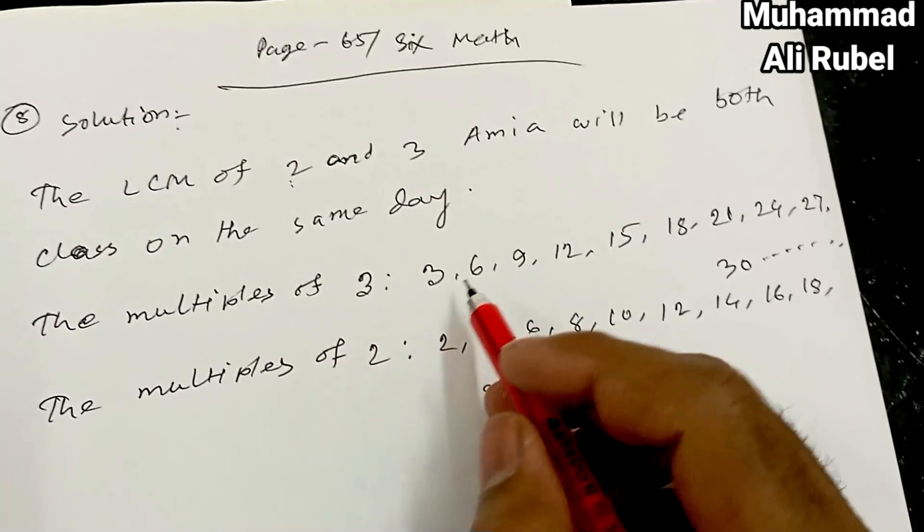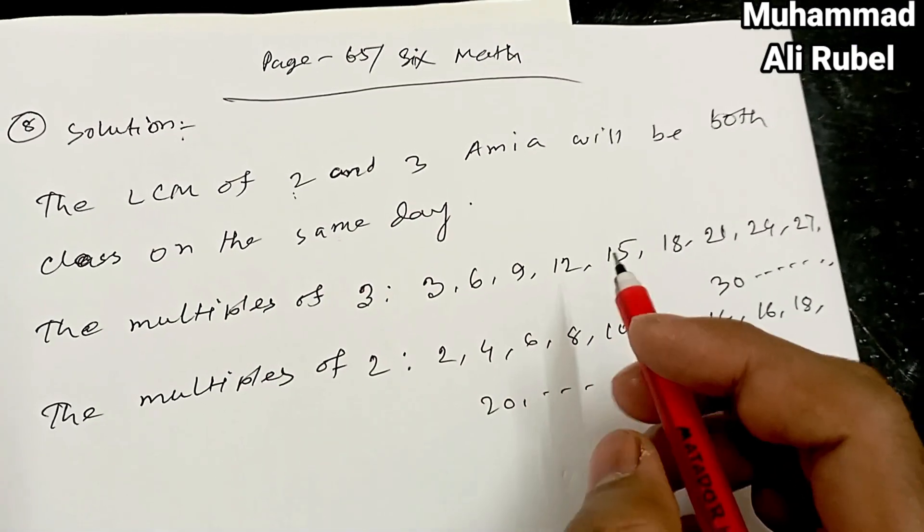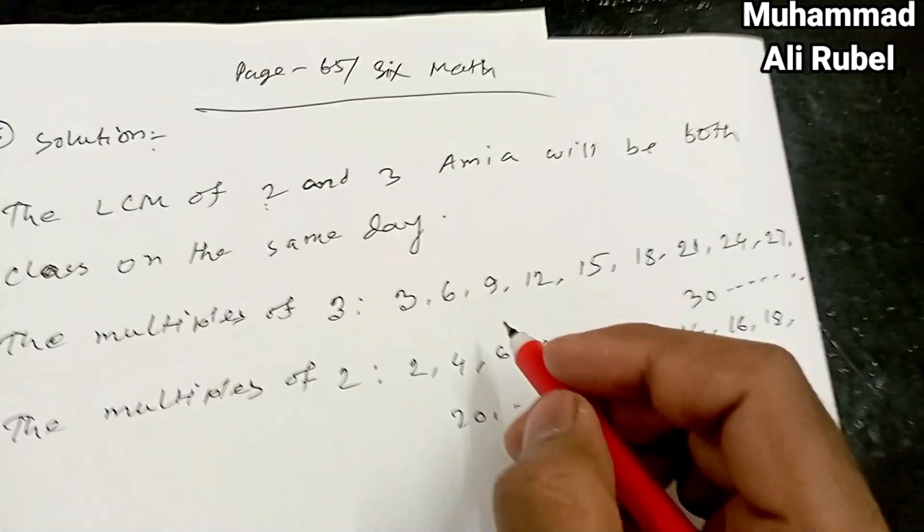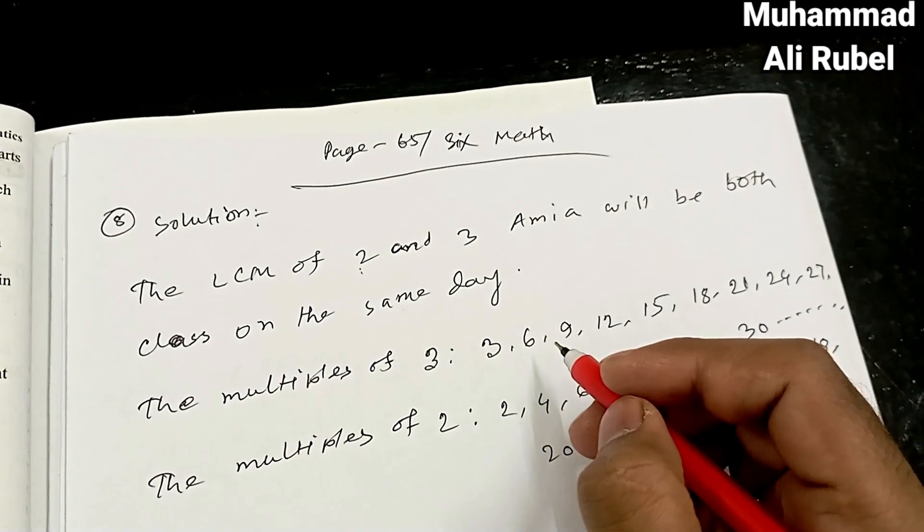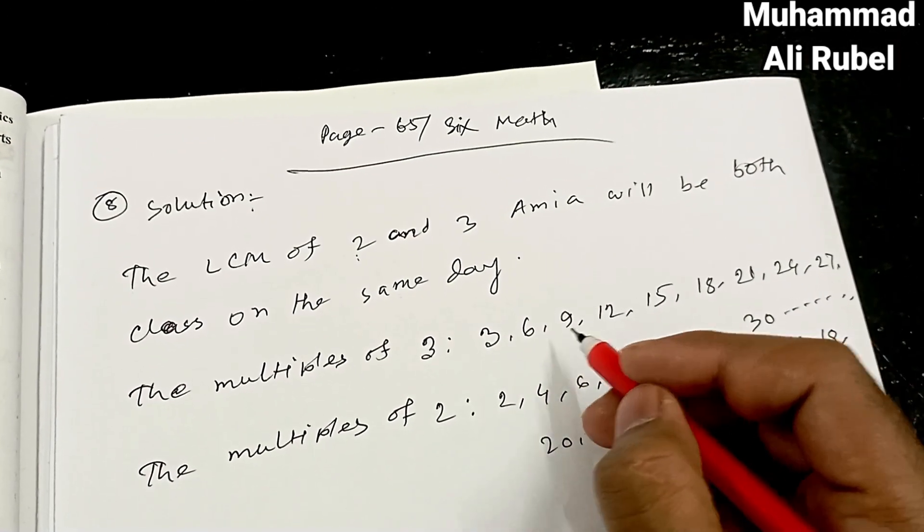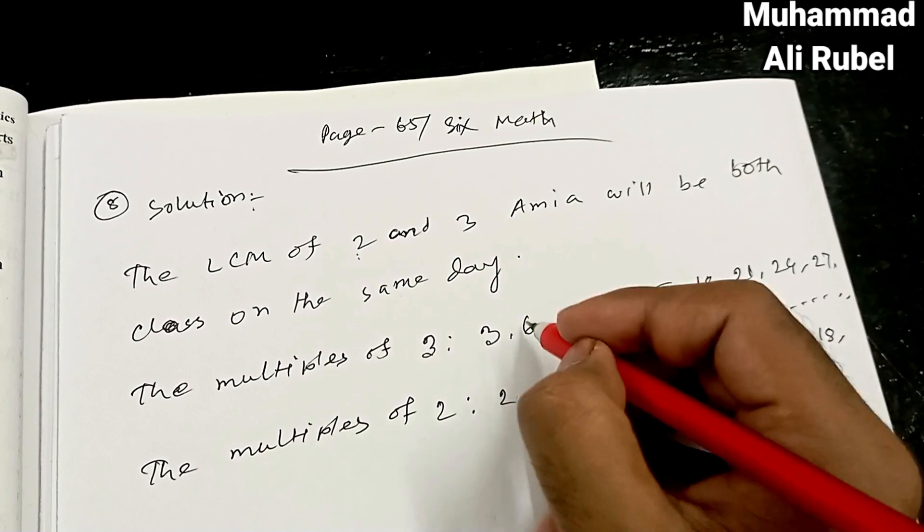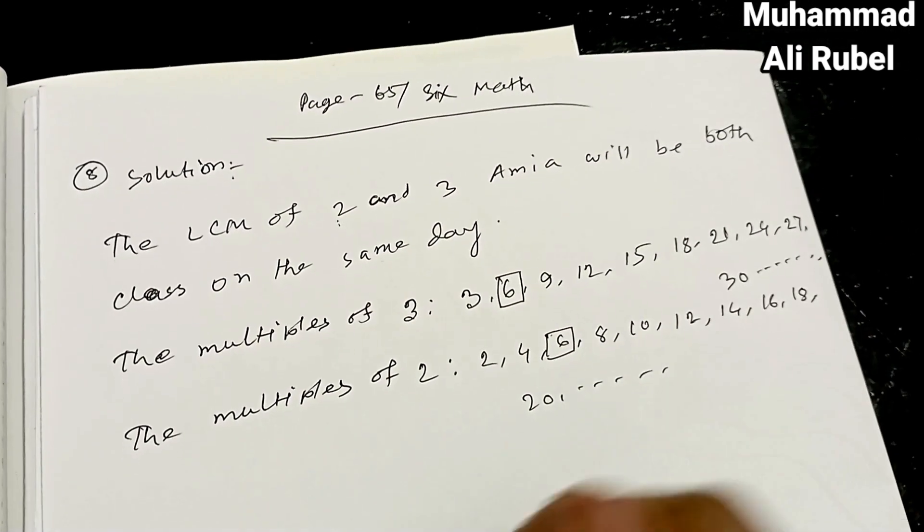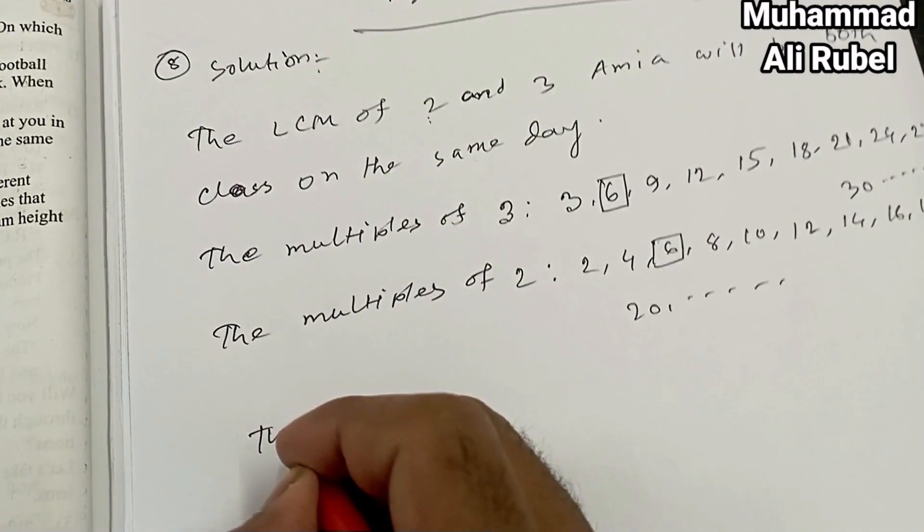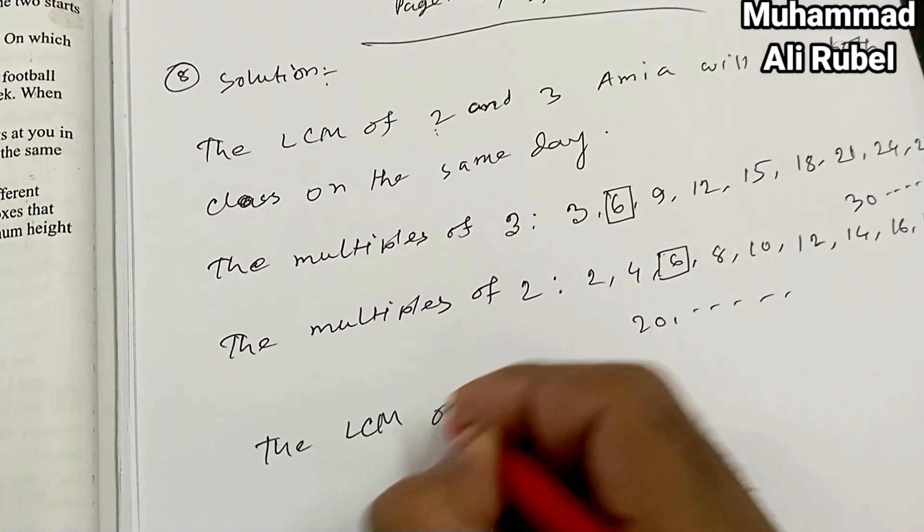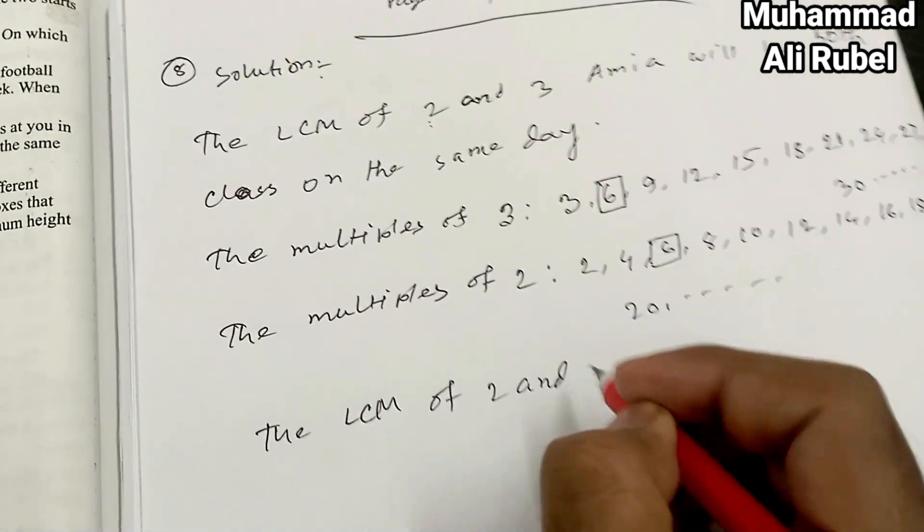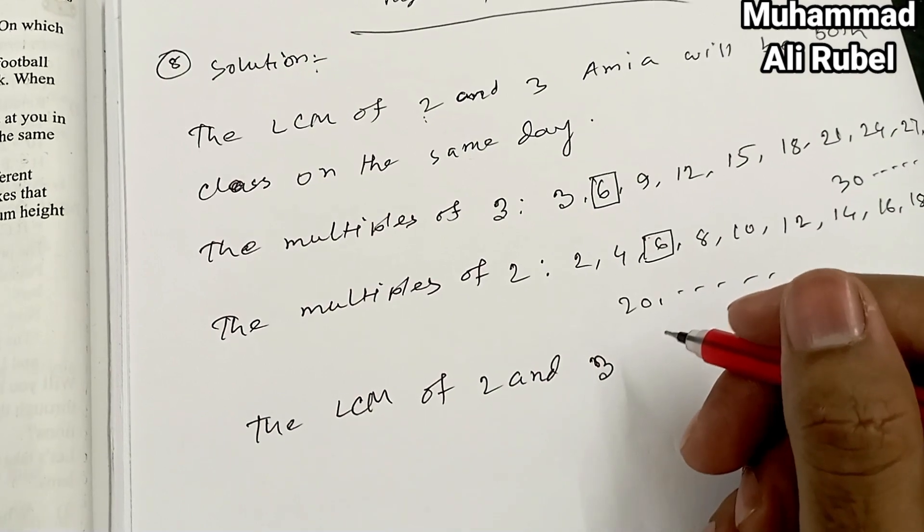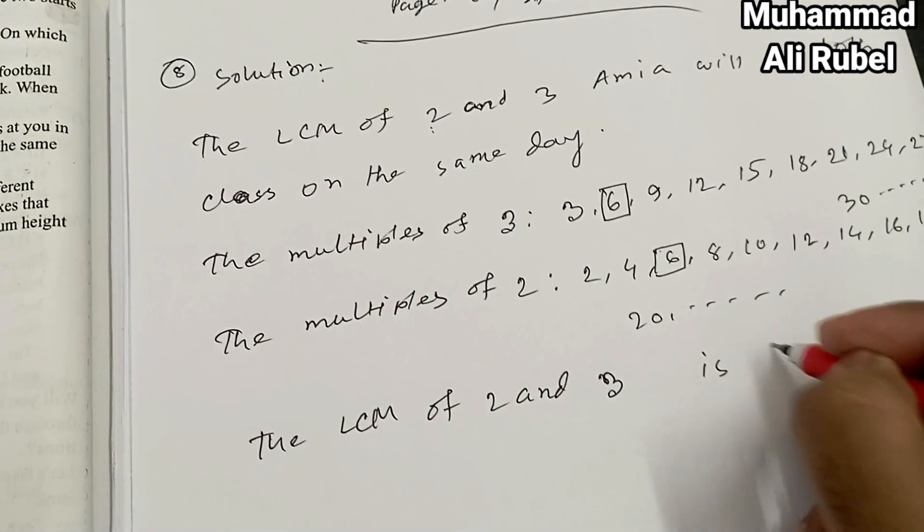The LCM is lowest common multiple. You look at 3, 6. The LCM of 2 and 3 is 6.